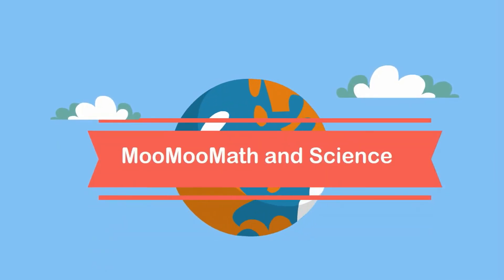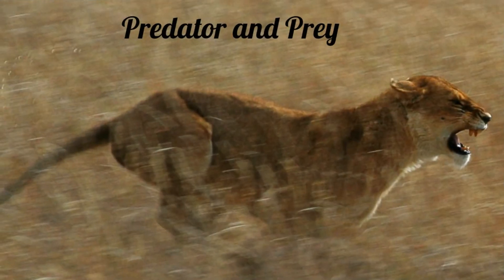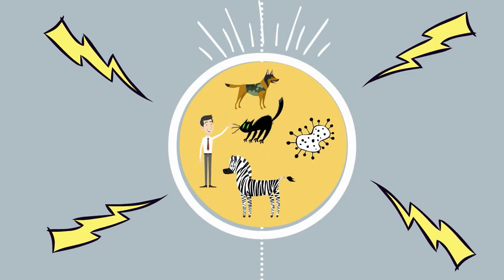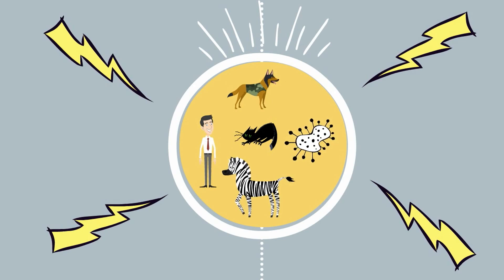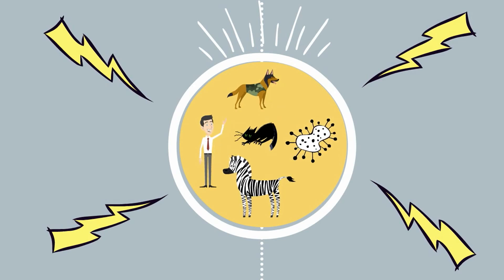Welcome to Moo Moo Math and Science. In this video I'd like to talk about the interaction of predator and prey. All living things require energy, however living things get their energy in different methods. Sometimes one individual consumes another individual.